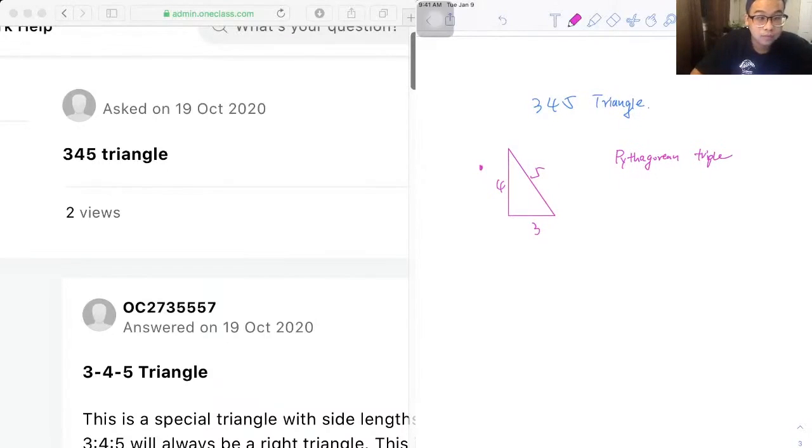To prove this, we must use Pythagorean theorem. Pythagorean theorem states that if the side lengths of a triangle satisfy the equation a² + b² = c², then it is a right triangle.